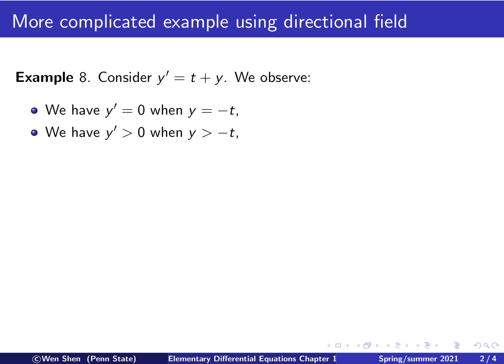Then for the area above this line, where y is bigger than negative t, we'll have y prime bigger than zero. And finally, for the area below, that is y less than negative t, then we'll have y prime less than zero.